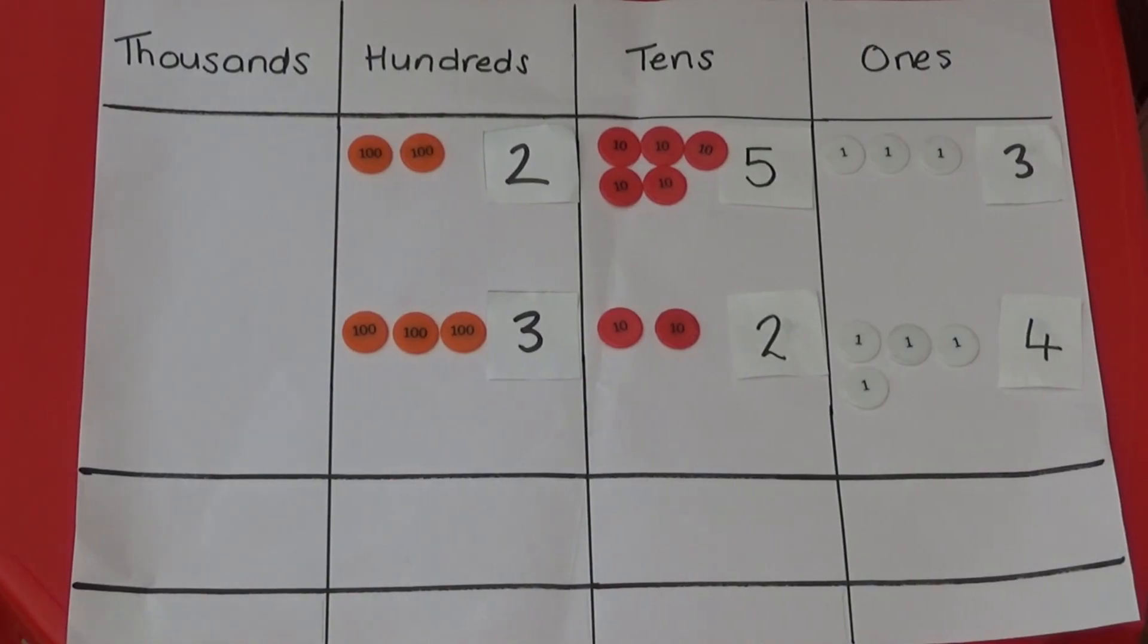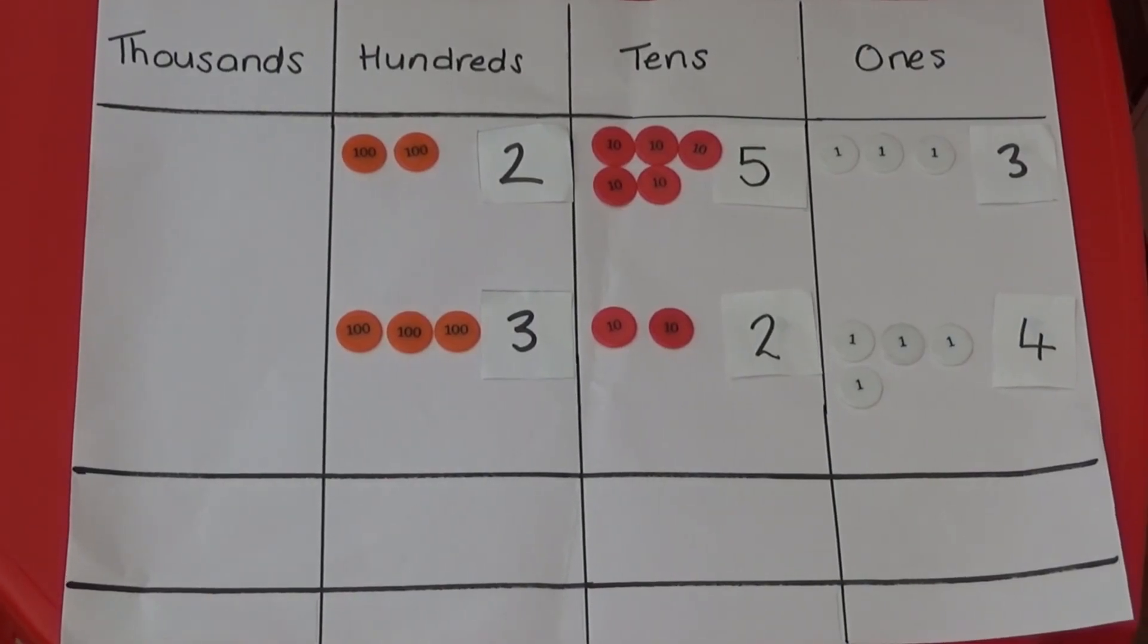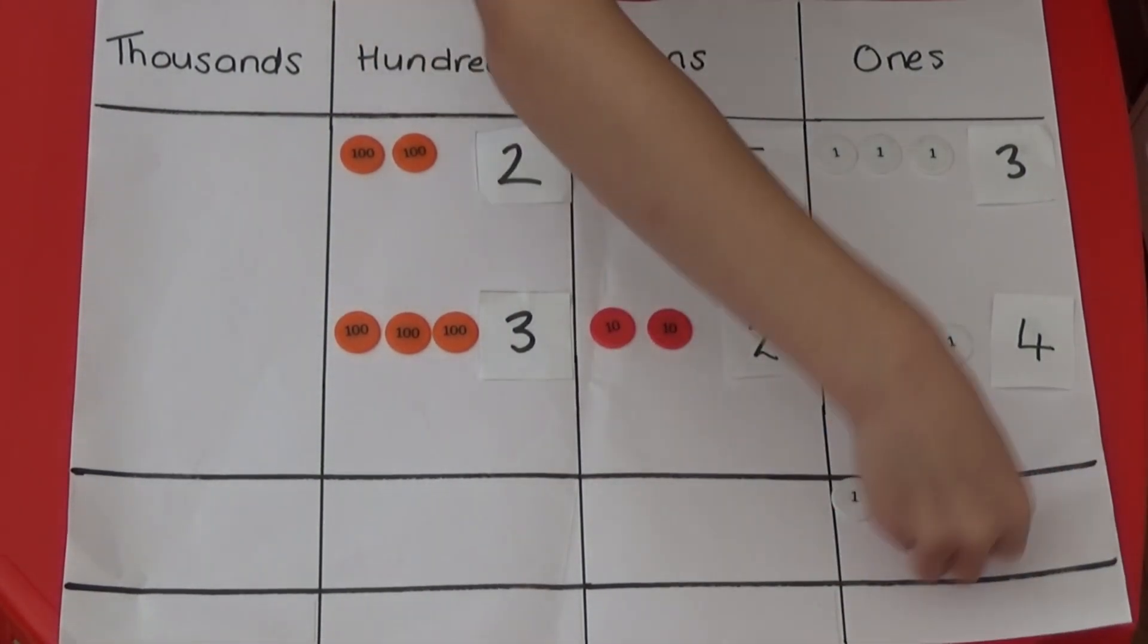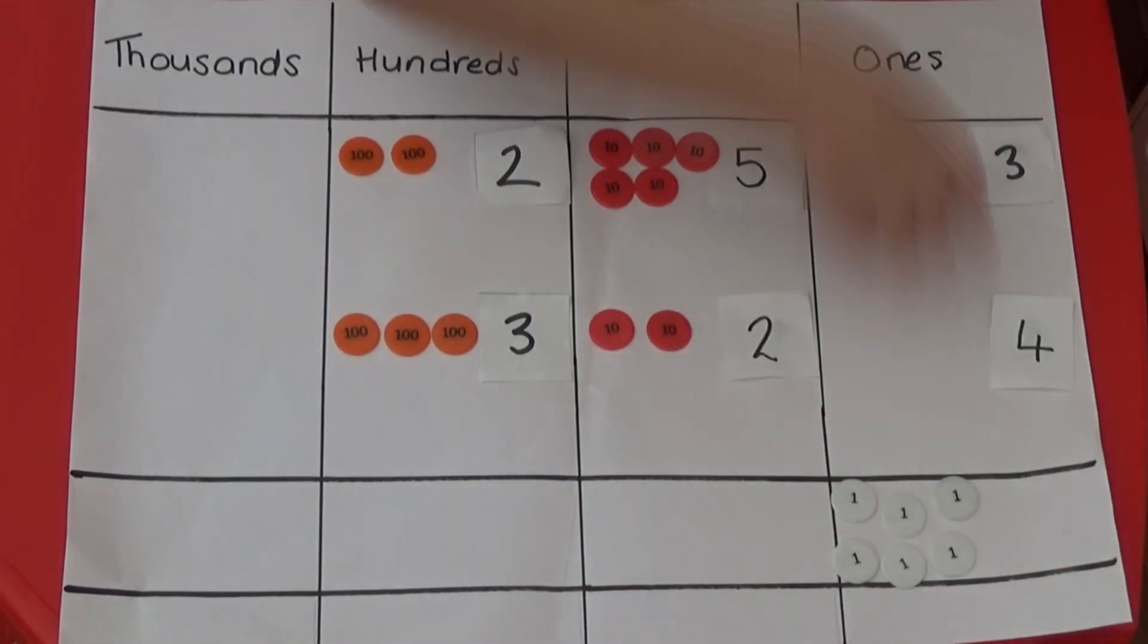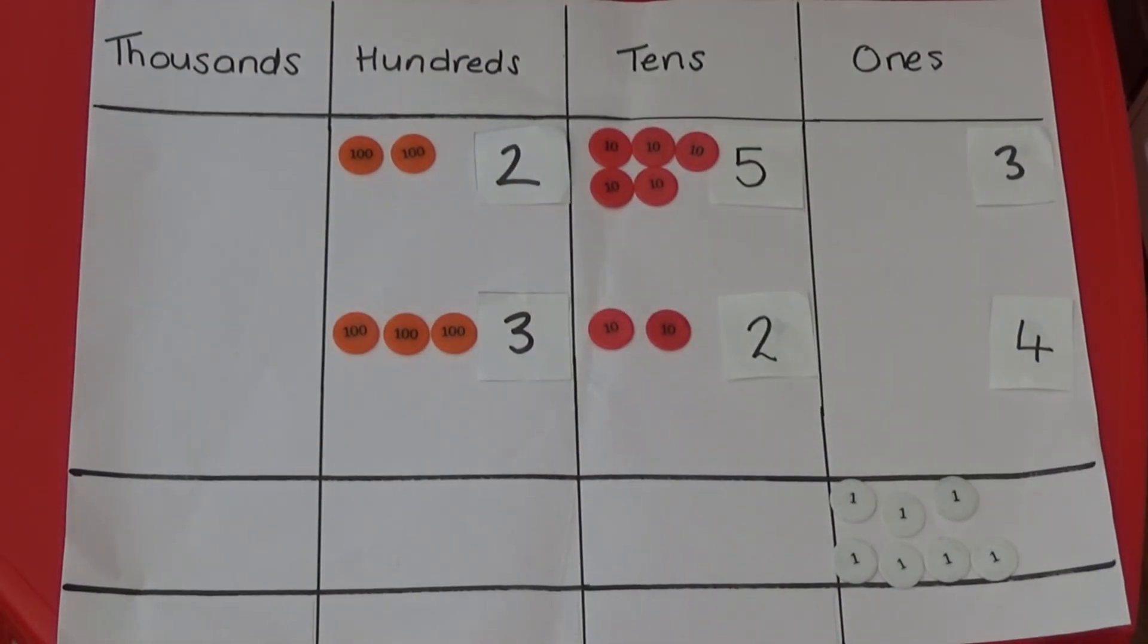When we do column addition we always start by adding the 1s first. I'm going to start by adding together the 3 and the 4. Next I'm going to add together the 5 10s and the 2 10s.